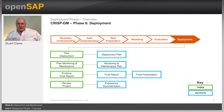Phase 6 of the CRISP process covers model deployment. The knowledge gained during the project will need to be organised and presented in a way that the customer can use it. Depending on the requirements, the deployment phase can be as simple as generating a simple report or as complex as implementing a repeatable data science process across the enterprise.